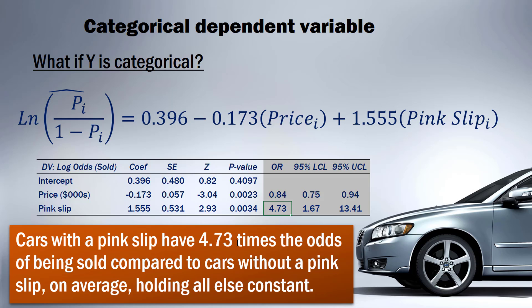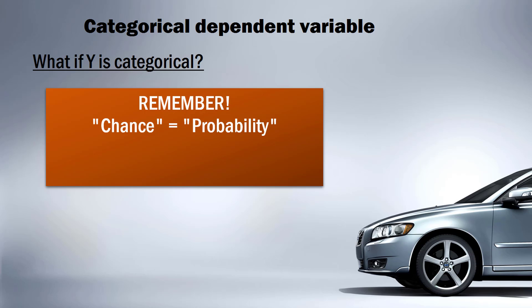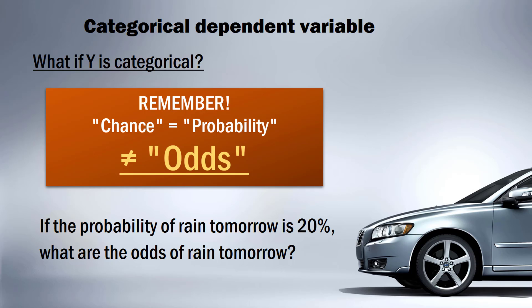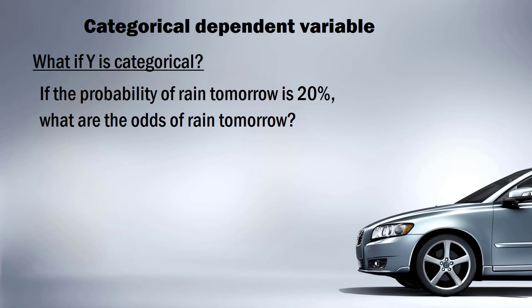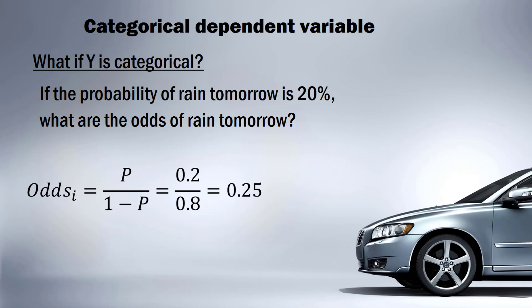To summarize: the coefficients tell us the effect of X on the log odds, and the odds ratio column tells us the effect on the odds. It's important to note that chance and probability are interchangeable, but odds mean something different. For example, a 20% probability of rain means we have a one-in-five chance of rain tomorrow. But the odds of rain are 0.2 divided by 0.8, which equals 0.25, or 1 to 4 — one chance of rain for every four chances of no rain.